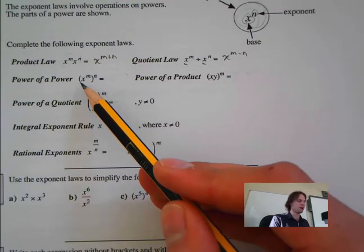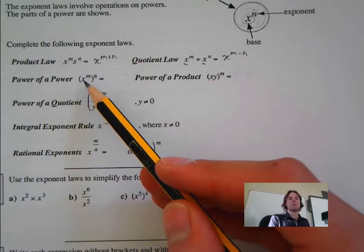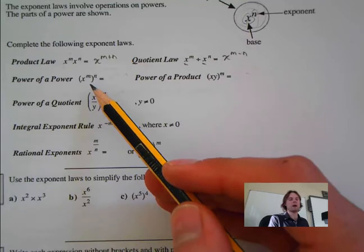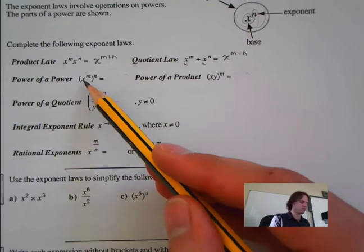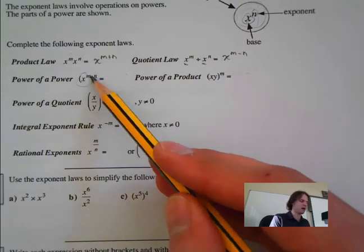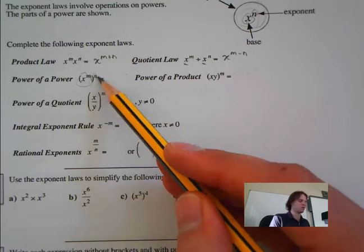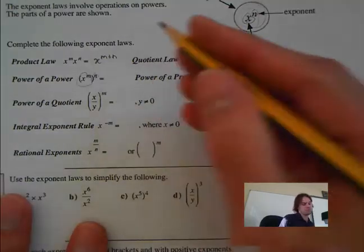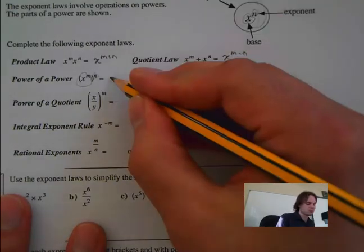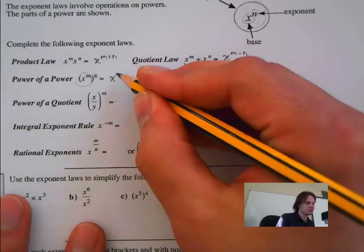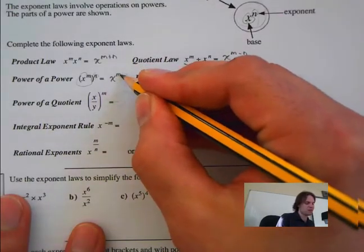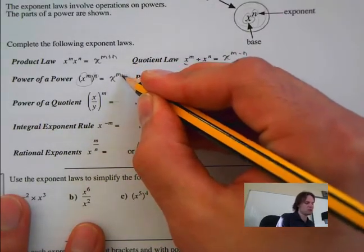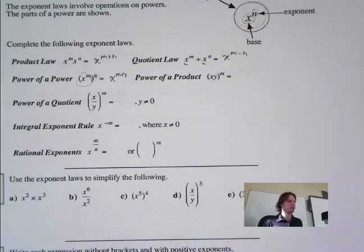Next we're looking at the power of a power. Here's my power and we have an exponent for that whole power. That's the same as x to the m multiplied by n.